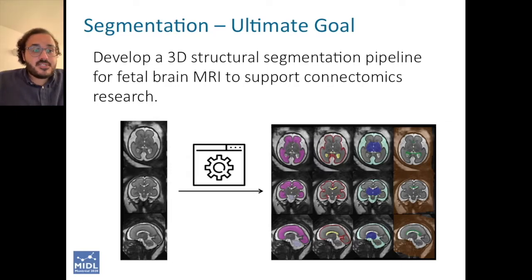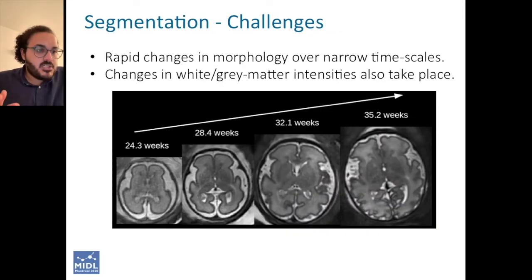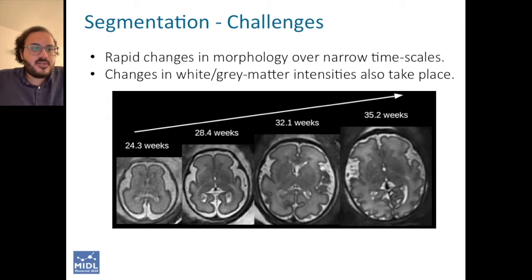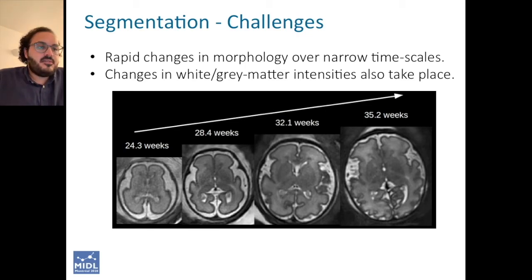This presents a key challenge though, because unlike adult brains, fetal brains tend to show rapid changes in morphology which take place over a narrow time scale. As you can see in the figure, fetal scans at very young ages, around 24 weeks of gestational age, tend to have very smooth structures.